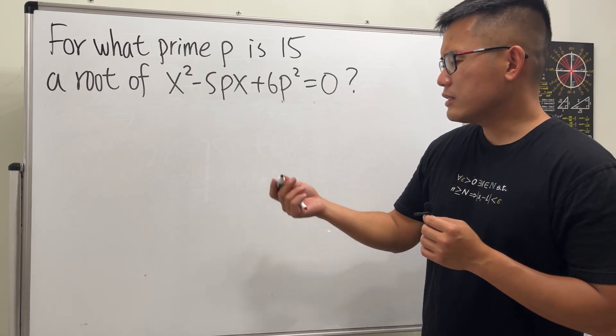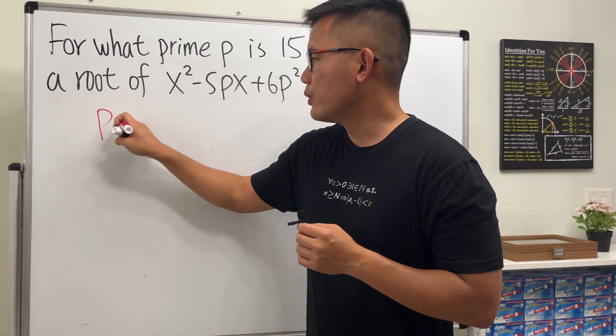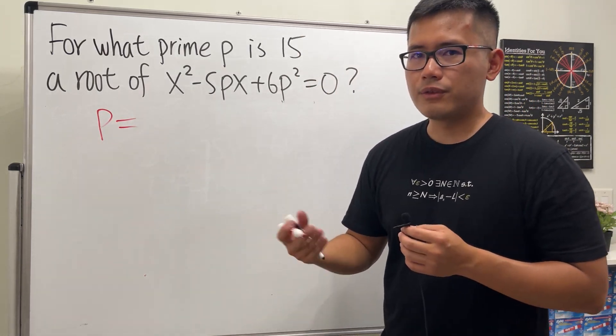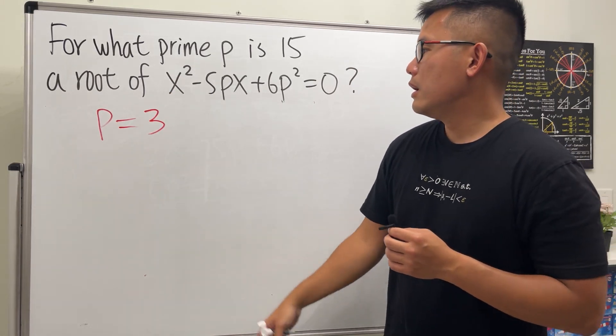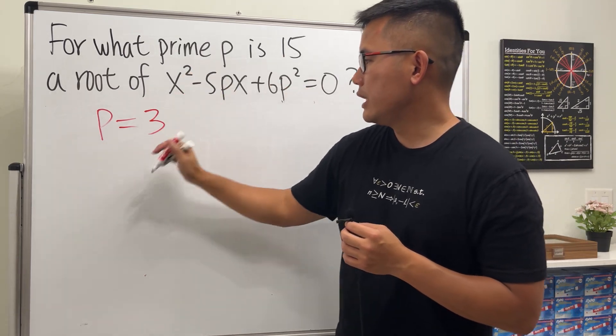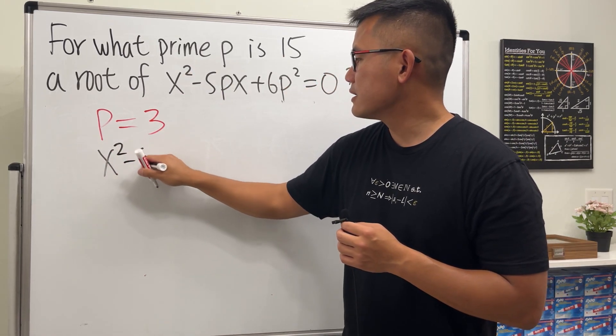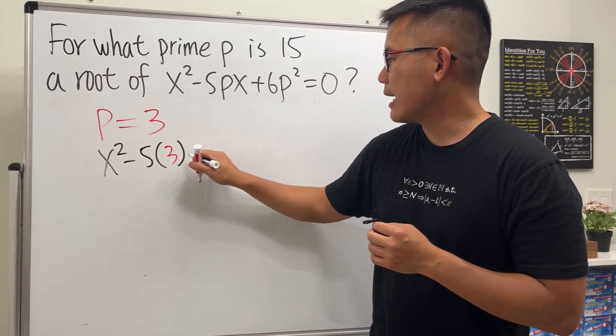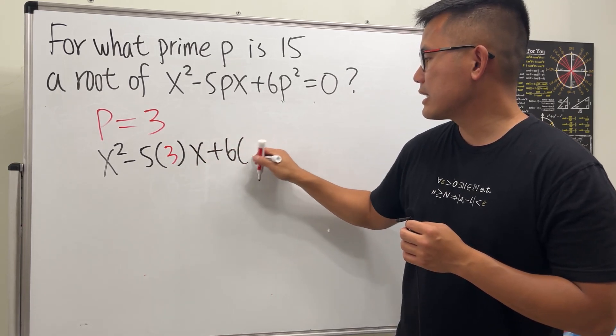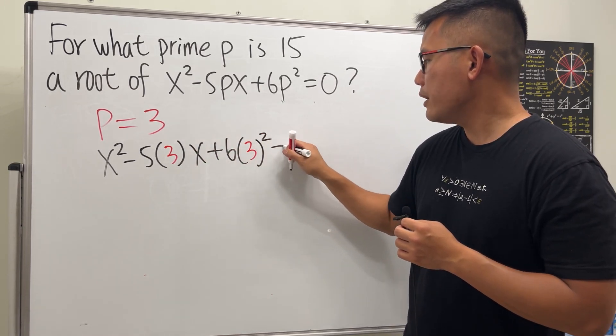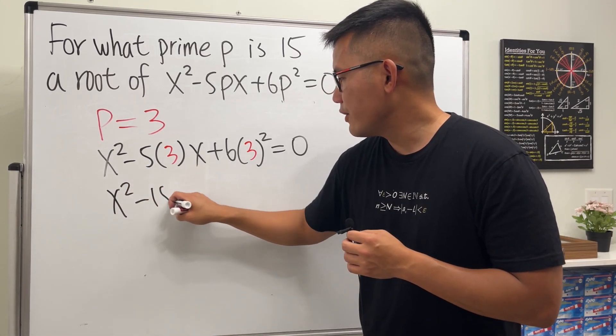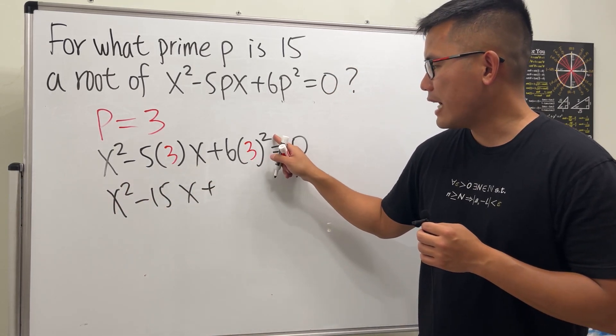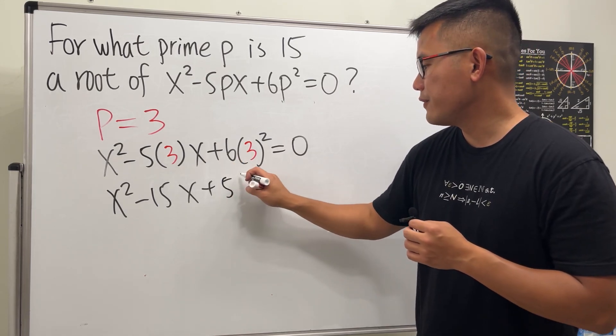Let's try - what if P is equal to... well, prime numbers we have 2, 3, 5, 7, all that. Let's try 3 and see what happens. So put 3 into all the P's. We get x² - 5(3)x + 6(3)² = 0. Then just work this out real quick: x² - 15x + 54 = 0. This is 9 times 6, we have 54.